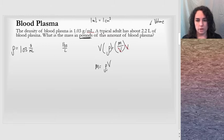So if I get rho in terms of pounds per liter, and then I multiply by V, which is in liters, I will have my answer in pounds.